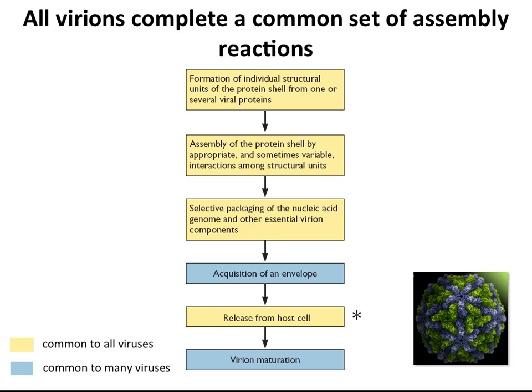The assembly steps are color-coded according to whether all viruses have to do them or just some of them. All viruses must make individual proteins, make a protein shell or capsid, and package the nucleic acid genome. Some viruses also have a lipid envelope derived from the host cell — that step is in blue because not all viruses do it.